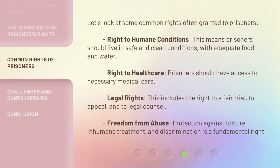Let's look at some common rights often granted to prisoners. Right to humane conditions: prisoners should live in safe and clean conditions, with adequate food and water. Right to health care: prisoners should have access to necessary medical care. Legal rights: this includes the right to a fair trial, to appeal, and to legal counsel. Freedom from abuse: protection against torture, inhumane treatment, and discrimination is a fundamental right.